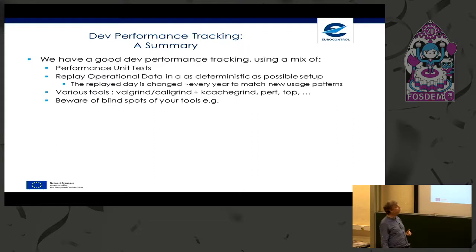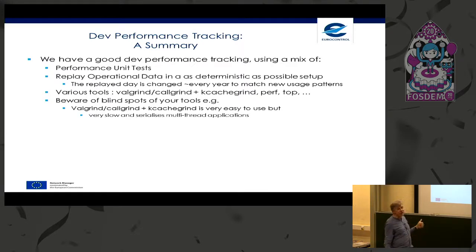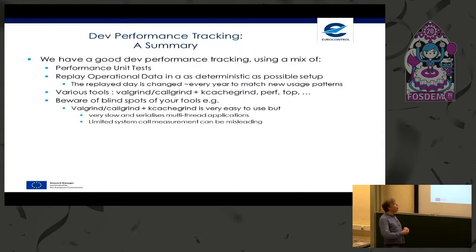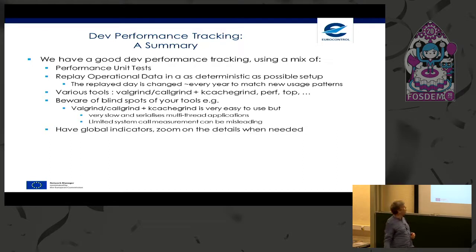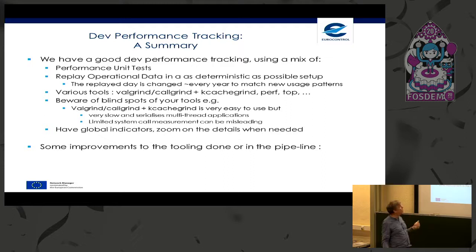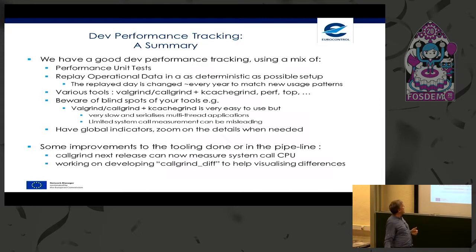Callgrind had limited system call measurement — it measured elapsed time in system calls but not system CPU. In our case, system CPU was important to measure. As I also happen to be a Valgrind developer, I changed Valgrind so that it now measures the system CPU spent in system calls. The next version of Valgrind/Callgrind will measure system CPU. We are also working on developing a Callgrind diff to help visualize differences, because currently comparing KCachegrind graphs is a little bit difficult.